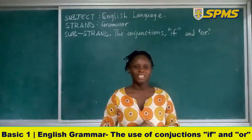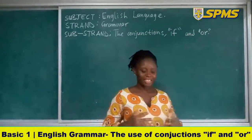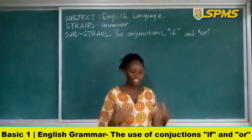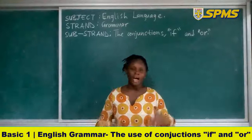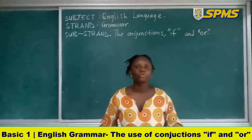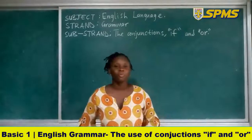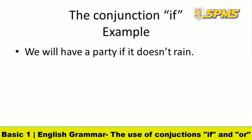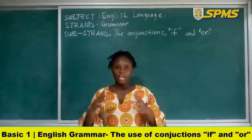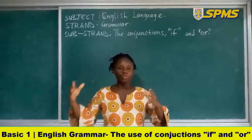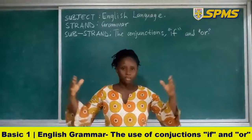Let's start with the conjunction 'if'. The conjunction 'if' shows conditions. A condition is something that happens as a result of something else. For example: we will have a party in the garden if it doesn't rain. The conjunction 'if' in that sentence is joining the two sentences together.